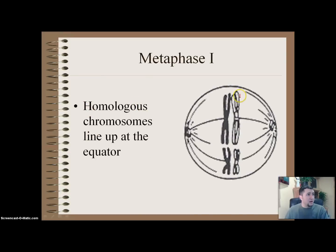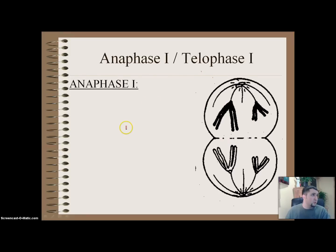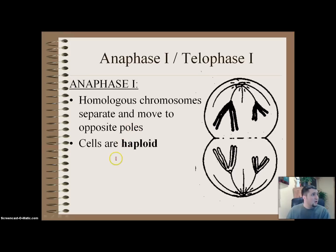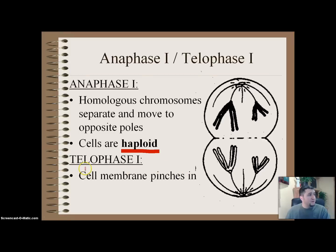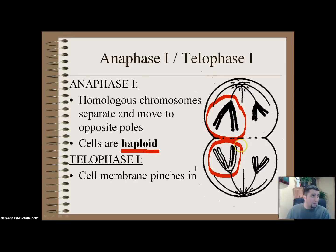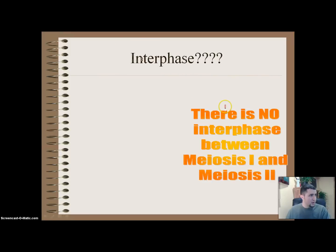In metaphase 1, homologous chromosomes — one from dad, one from mom — line up at the equator just like in mitosis, then go their separate ways. In anaphase 1 and telophase 1, chromosomes separate just like in mitosis. At this point, cells become haploid. Even though there appear to be two copies from dad, it's the same genetic information — just multiple copies — so mom goes one way and dad goes the other.